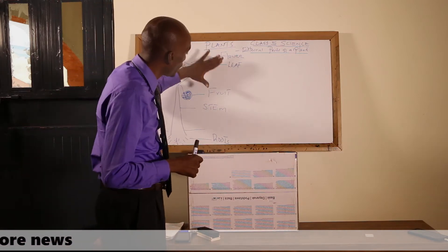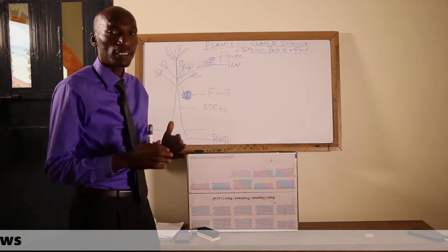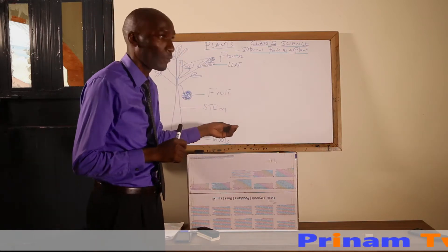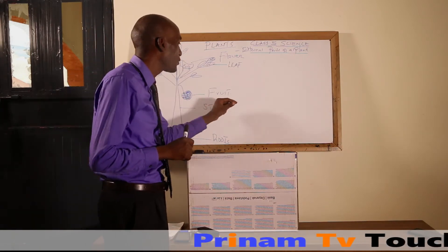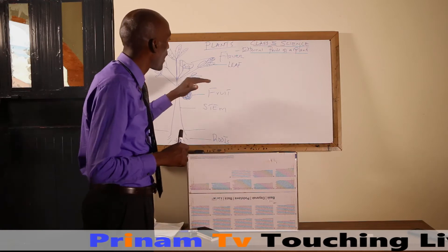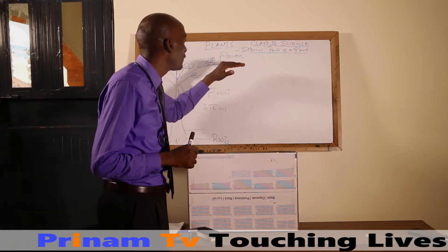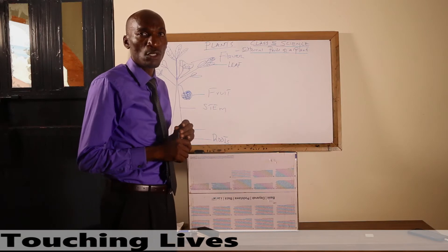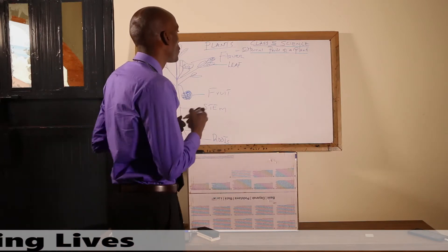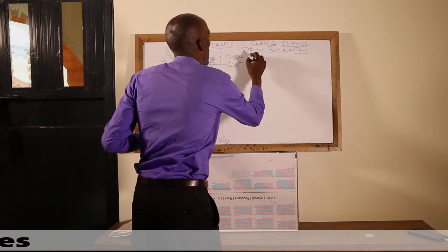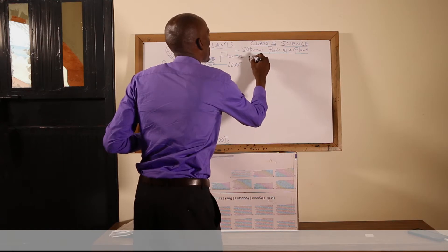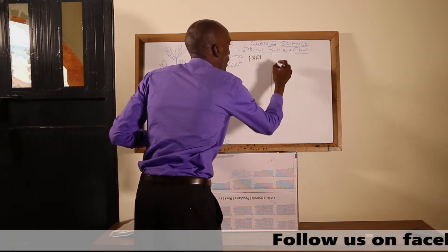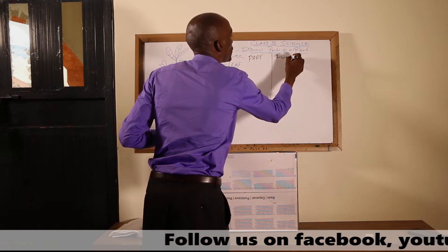Now, after knowing the external parts of a plant, we are supposed to know what are the functions of the roots, what are the functions of the stem, what are the functions of the leaves, and also the functions of the flower and the fruit. So we'll set up a table with the parts and their functions.